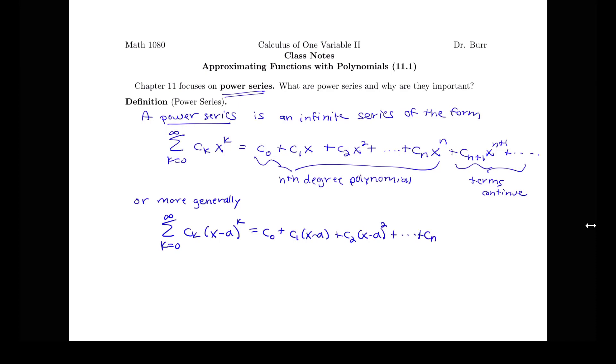My nth term would be the c_n times x minus a to the n. I'd have an n plus 1th term of c_n+1 times x minus a to the n plus 1, and then this would just keep going and going. So notation here where my a and my c_k here are constants. We would say that the c_k's here are our coefficients and we call a here the center of the series.